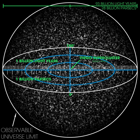According to calculations, the current co-moving distance — proper distance, which takes into account that the universe has expanded since the light was emitted — to particles from which the cosmic microwave background radiation was emitted, which represent the radius of the visible universe, is about 14.0 billion parsecs (about 45.7 billion light-years), while the co-moving distance to the edge of the observable universe is about 14.3 billion parsecs (about 46.6 billion light-years), about 2% larger.